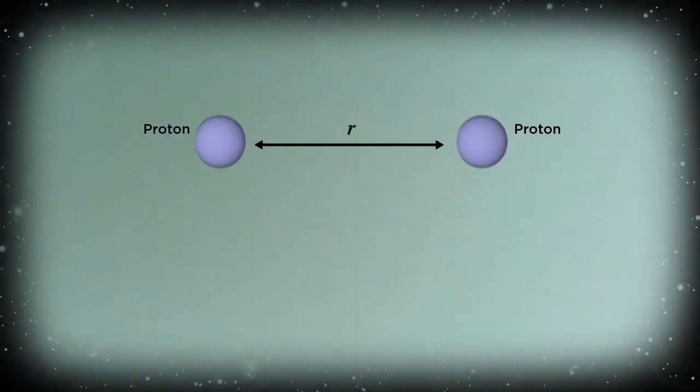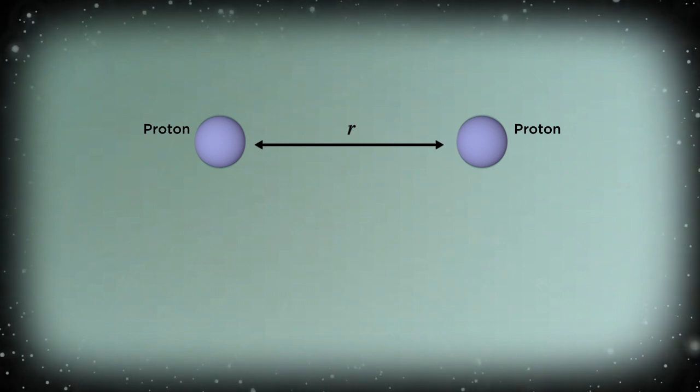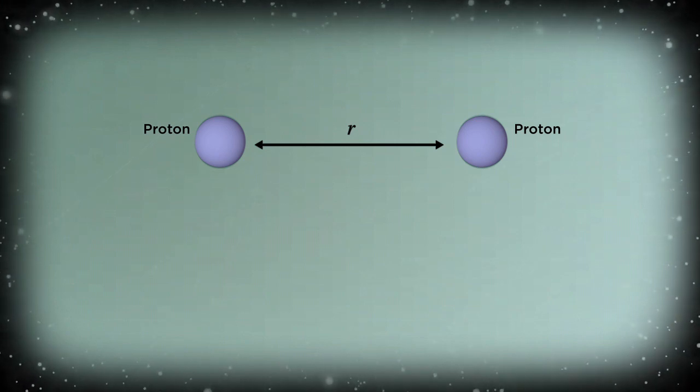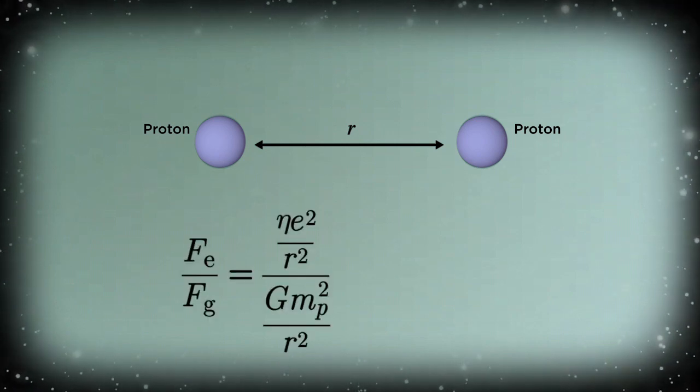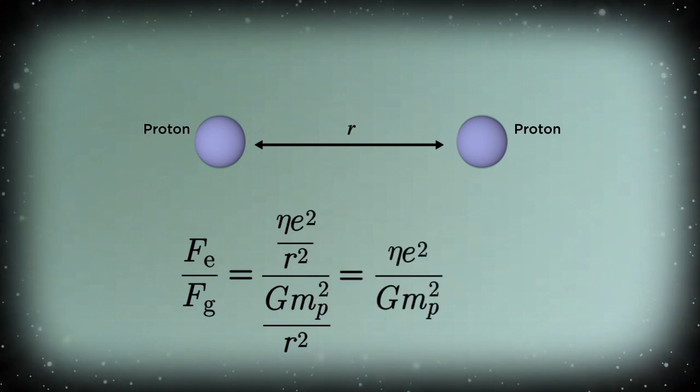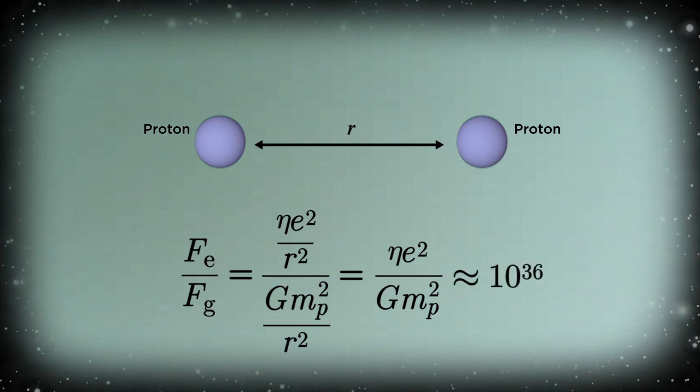But there are major differences between gravity and electromagnetism, starting with the fact that electromagnetism is much stronger. Say you have two protons separated by some distance r. What's the ratio between the force of electric repulsion and the force of gravitational attraction? To find out, we divide the Coulomb force by the gravitational force. The r squareds cancel. And then when we plug in the numerical value of all of those constants, we find the ratio is 10 to the 36th power.